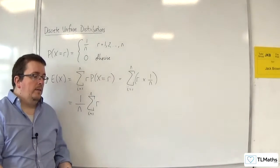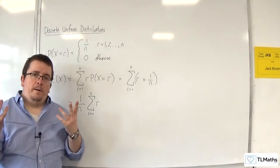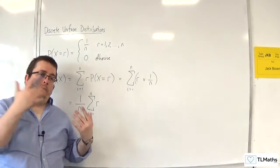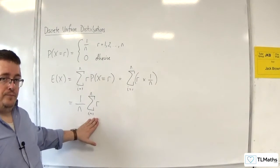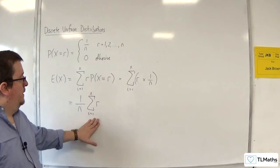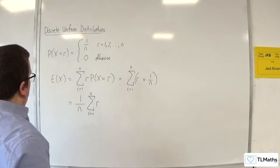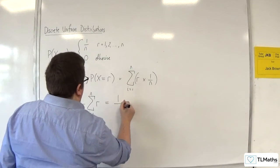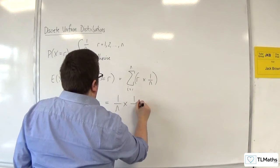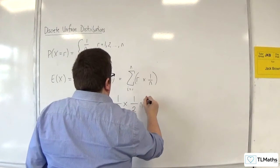Now, assuming that you've done series as part of core pure, we should know what that is equal to. So, the sum from r equals 1 to n of r is equal to 1 half n, n plus 1.